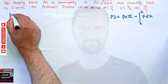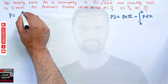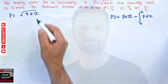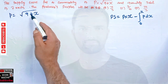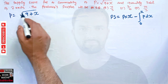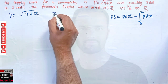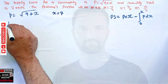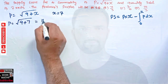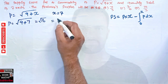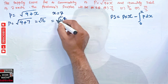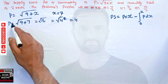Coming to the question, we have P equal to the square root of 9 plus x, where I write small x to differentiate it from the plus sign. This is our price function. The quantity X is 7. Now the price equals the square root of 9 plus 7, which is the square root of 16, which equals 4. So the equilibrium price would be 4.